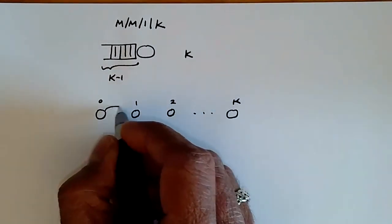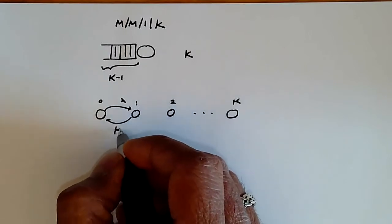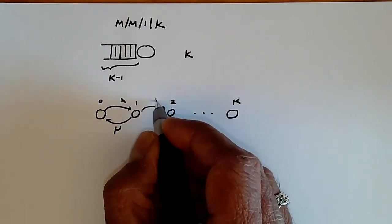And we have the normal arrival and departure processes, departure rates, so you have lambda, and then mu is the service rate. This is, again, state independent.